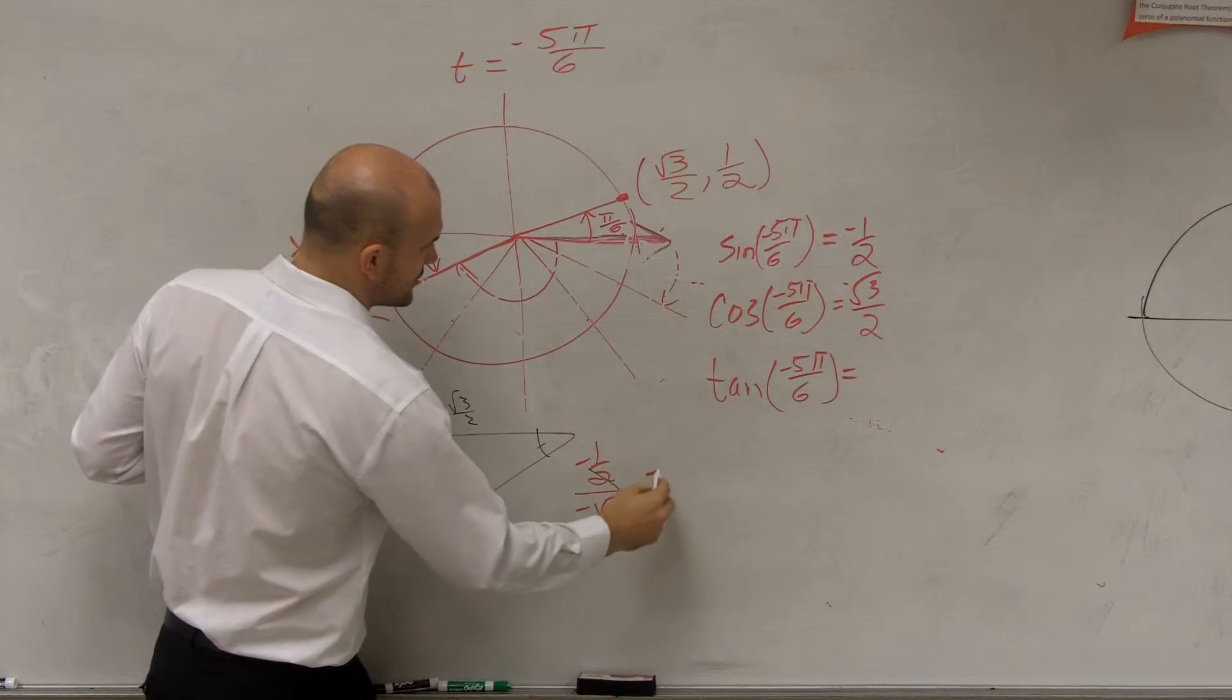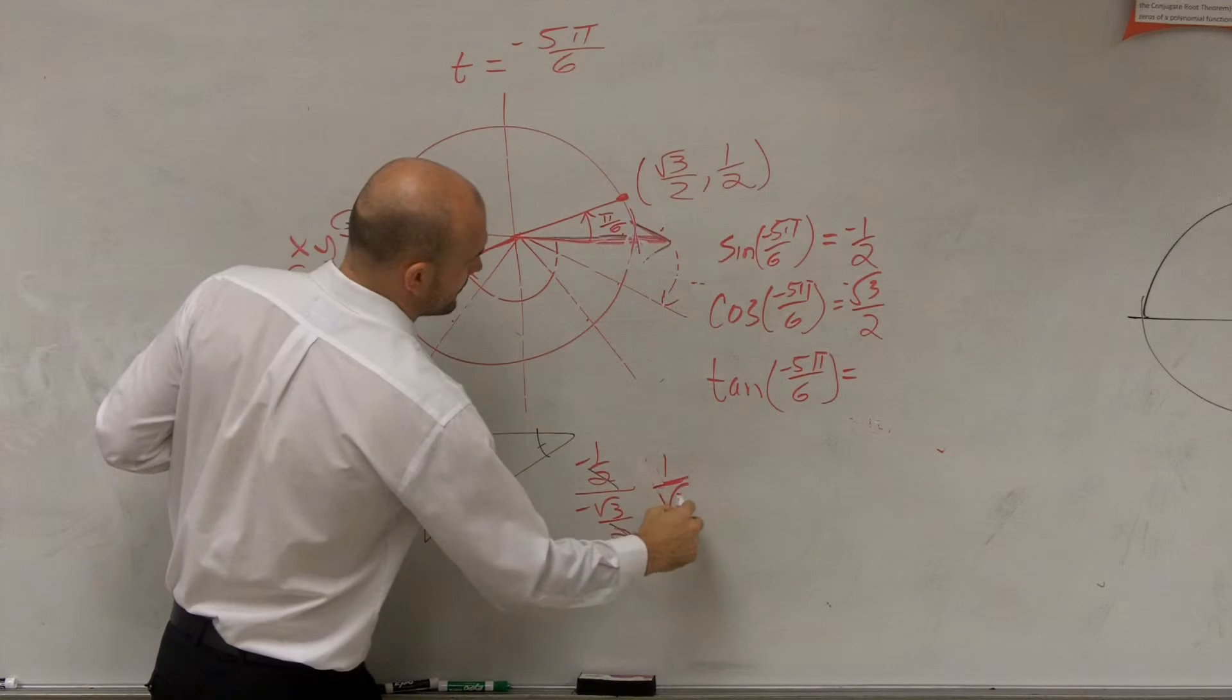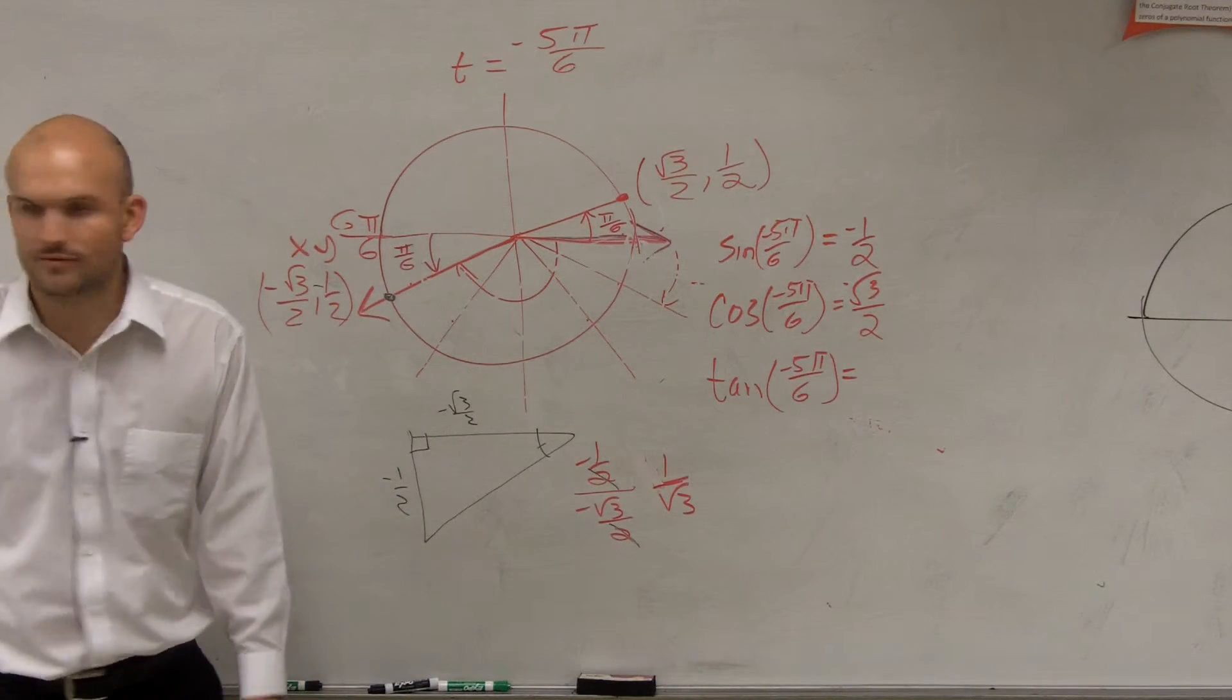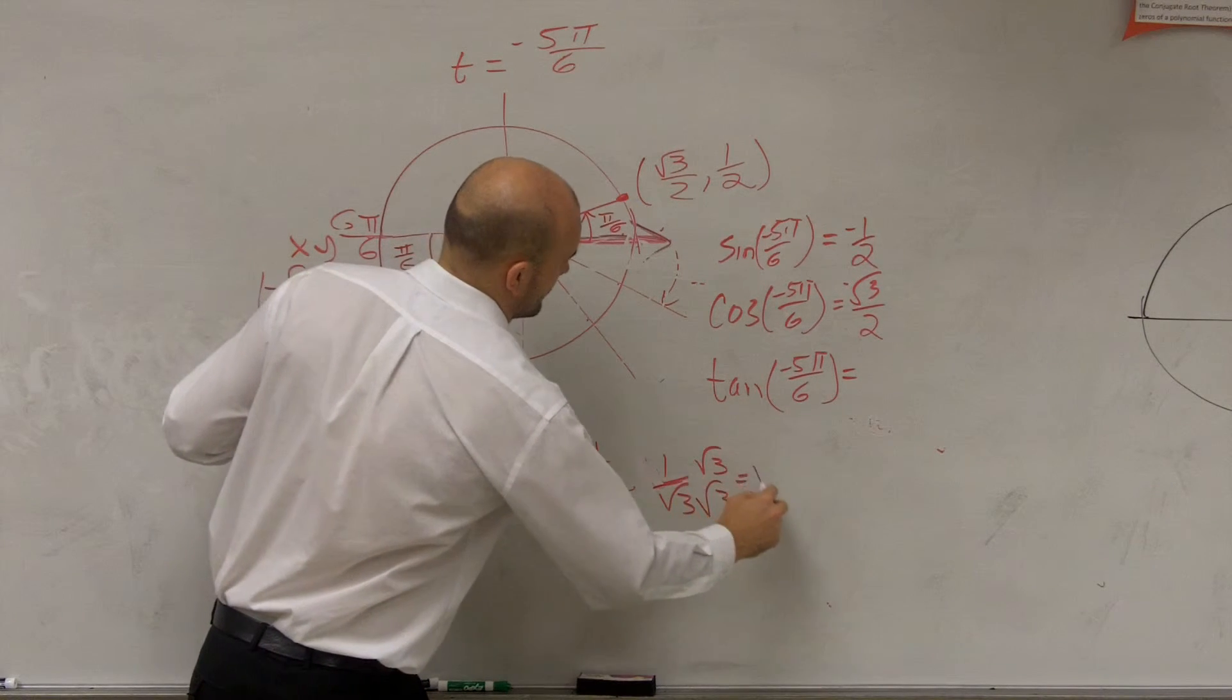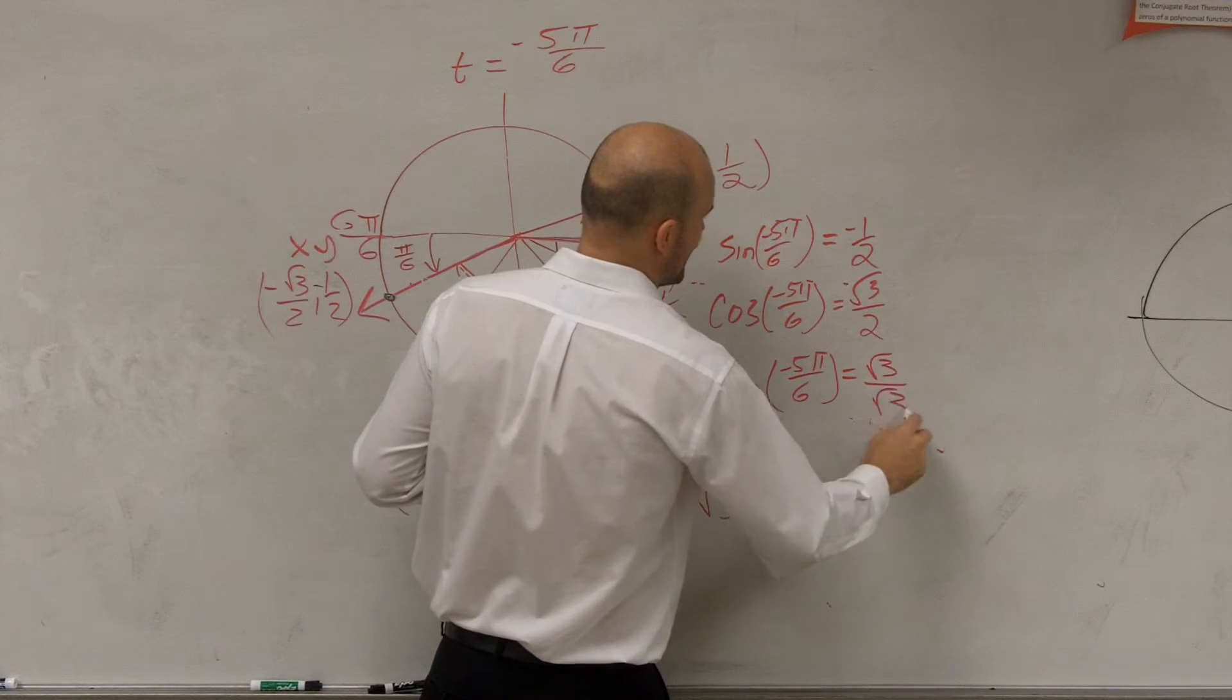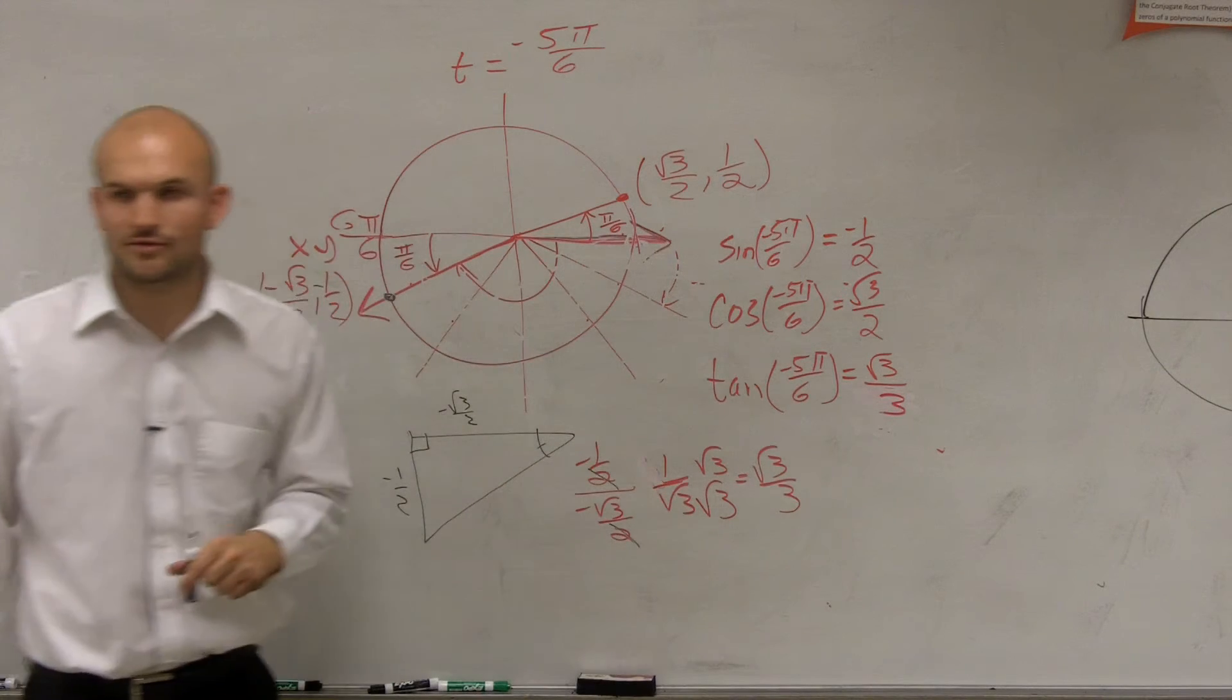So therefore, I can now do negative 1 over, well, this becomes negatives divide out. So I have 1 divided by the square root of 3. Can I divide by the square root of 3? So you have to rationalize the denominator. Ladies and gentlemen, you are going to be the best at rationalizing the denominator after we're done with this course. Square root of 3 over 3.